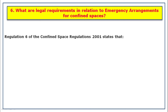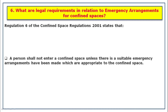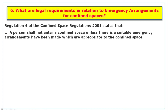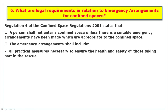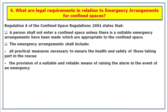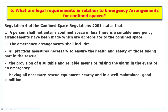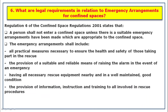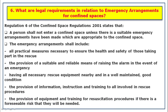What are the legal requirements in relation to emergency arrangements for confined spaces? Regulation 6 of the Confined Spaces Regulations states that a person shall not enter a confined space unless suitable emergency arrangements have been made which are appropriate to the confined space. The emergency arrangements shall include: all practical measures necessary to ensure the health and safety of those taking part in the rescue; provision of a suitable and reliable means of raising the alarm in an emergency; having all necessary rescue equipment nearby and in well-maintained good condition; provision of information, instruction, and training to all involved in rescue procedures; and provision of equipment and training for resuscitation procedures if there is a feasible risk that they will be needed.